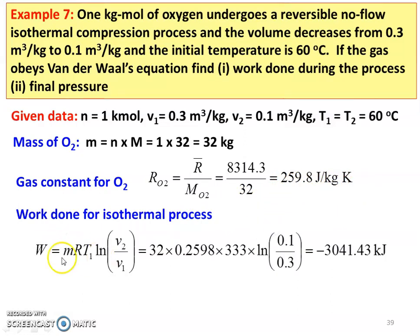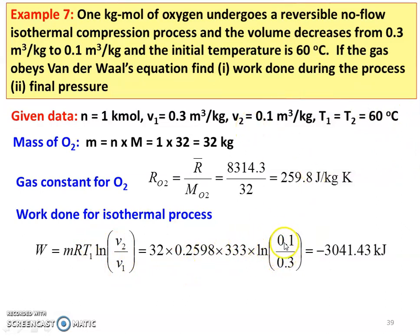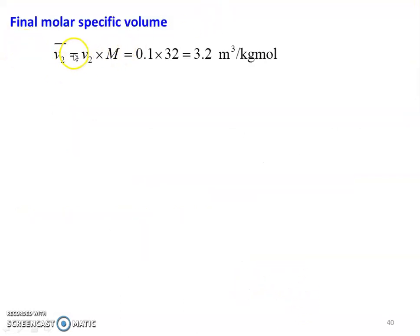Work done for the isothermal process: W = MRT1 into ln(V2/V1). Substituting M = 32, R = 0.2598, T = 60°C = 333 Kelvin, V2 = 0.1, V1 = 0.3: W = 32 into 0.2598 into 333 into ln(0.1/0.3) = minus 3,041.43 kilojoules. The negative sign indicates it is a compression process — work done is negative. Final molar specific volume: V2-bar = V2 into molecular weight = 0.1 into 32 = 3.2 meter cube per kilogram mole.